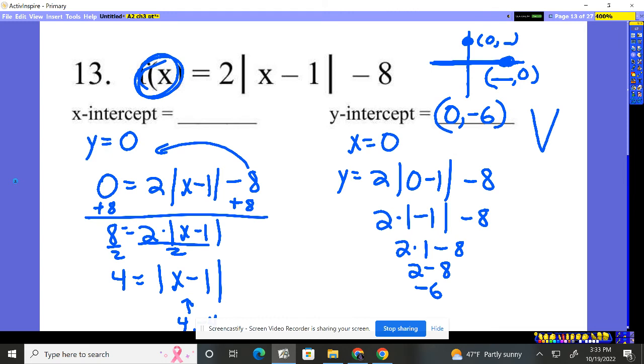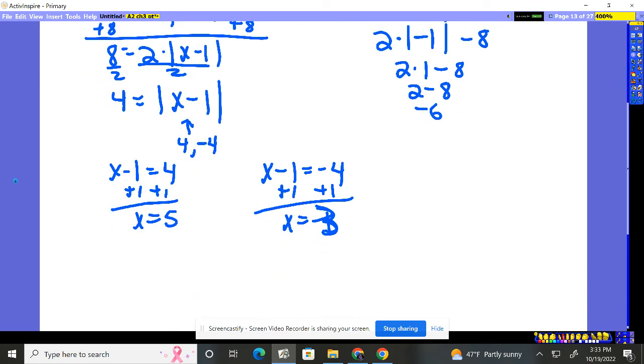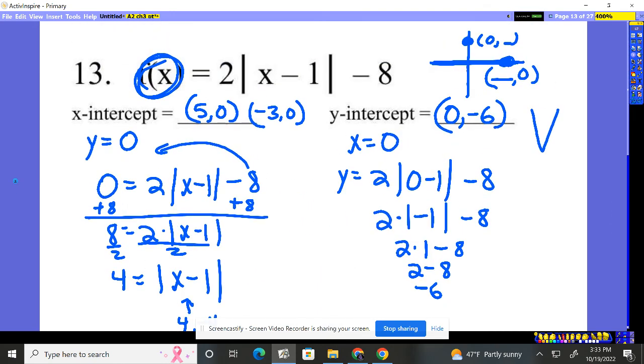So we come back here. 5, 0. Negative 3 was the other option. 0, right? 5, 0, negative 3, 0. Let me double check myself. Yes, 5 and negative 3 were our x values. So there we have it. It's crossing at 5, 0, negative 3, 0. And the y-intercept is at 0, negative 6.